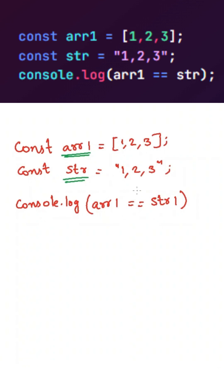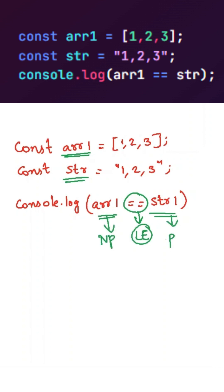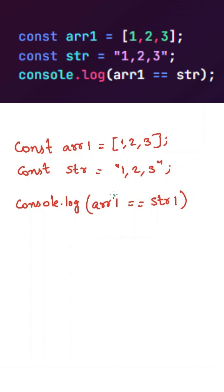In the third line, we are using a loose equality operator between this array and a string. In JavaScript, whenever we use a loose equality operator between a non-primitive data type and a primitive data type, then JavaScript will try to convert this non-primitive data type into its primitive equivalent. Now the JavaScript engine will perform type coercion on this array and it will use the .toString method on this array, which will return string 1, 2, 3.